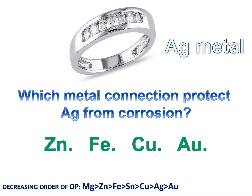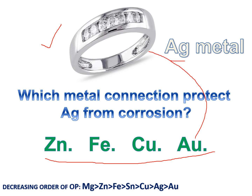I have a question for you: I have a silver (Ag) metal and I want to protect it. Which connection of the following metals will protect the silver metal — zinc, iron, copper, or gold (Au)? If I connect silver with gold: silver has a higher oxidation potential than Au, so silver acts as the anode and Au acts as the cathode. The anode is involved in corrosion, so Ag will corrode — it is not protected. You should not connect Au to protect Ag.